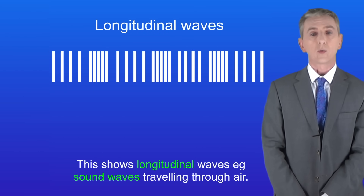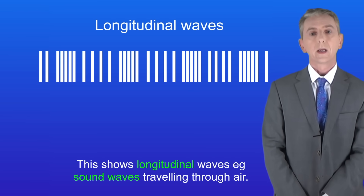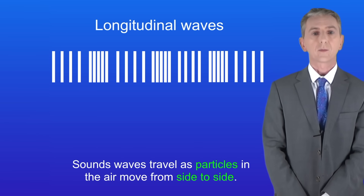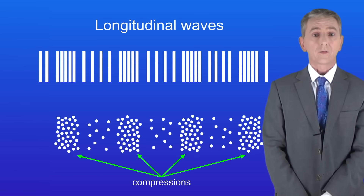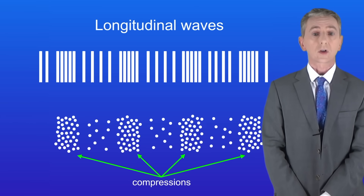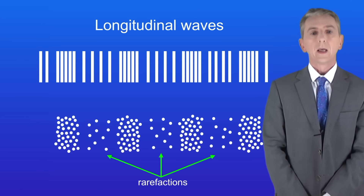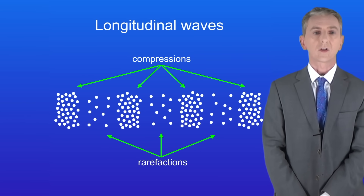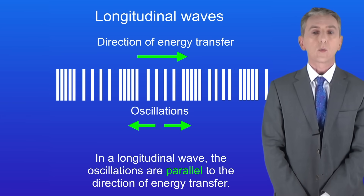Now let's look at the second category: longitudinal waves. A good example of a longitudinal wave is sound waves traveling through air. Sound waves travel as particles in the air move from side to side. You can see regions where the air particles are very close together — scientists call these compressions. In between the compressions we have regions where the air particles are spaced out, called rarefactions. Here I've paused the wave so you can see the compressions and rarefactions more clearly.